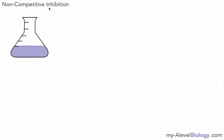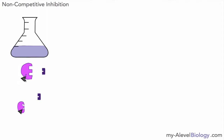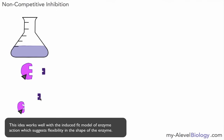Next we look at non-competitive inhibition, which works slightly differently. Imagine again we have our enzyme and substrate happily reacting. A non-competitive inhibitor still inhibits but does not compete for the active site. Instead, it fits into a part of the enzyme that is not the active site. Once it does that, it actually changes the shape of the active site so the substrate can no longer fit in. The inhibitor is not competing for the active site — it manages to alter the active site by attaching to a different site on the enzyme.